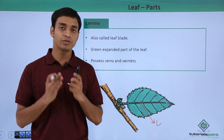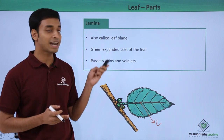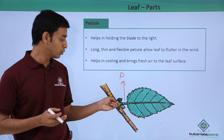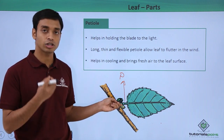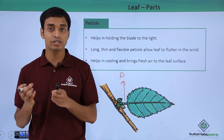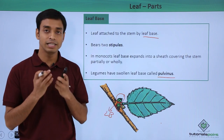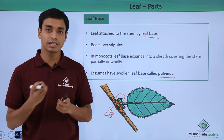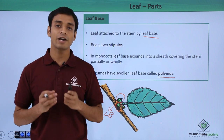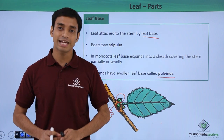In this video we have talked about three important structures of the leaf: the lamina, which is the leaf blade; the petiole, which is the stalk that holds and attaches the leaf to the stem; and the leaf base, which is the area where the leaf attaches itself to the stem. I hope you have understood and liked this video. Thank you.